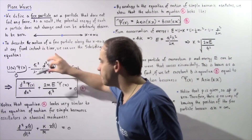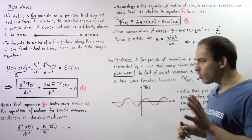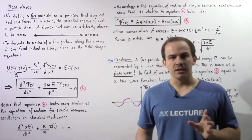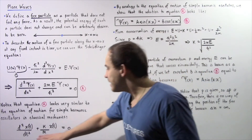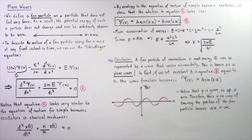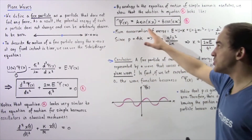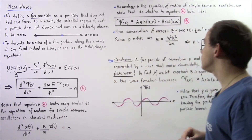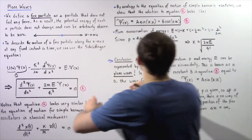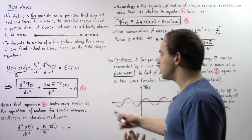The second derivative of the wave function with respect to x, plus a constant multiplied by the wave function, is equal to zero. Notice what this equation actually looks like — it resembles the equation of motion for simple harmonic oscillators in classical mechanics. By analogy, we can readily show that the solution to equation A looks similar to the solution for that classical mechanics equation. We call our solution equation B. If we substitute these two quantities with equation B, the two sums will equal zero — that's exactly what we mean by a solution to equation A.